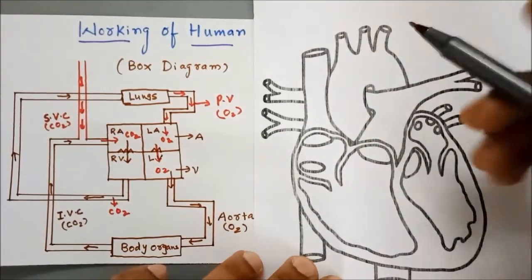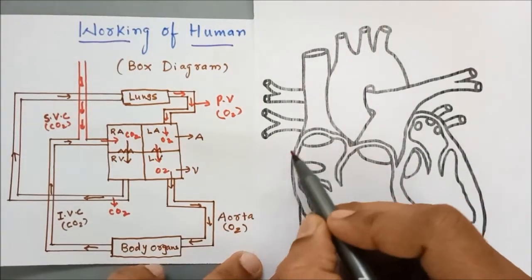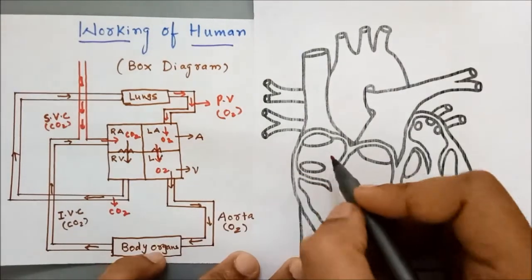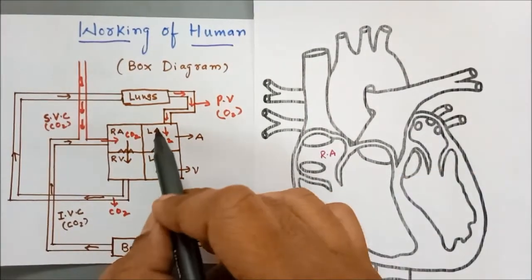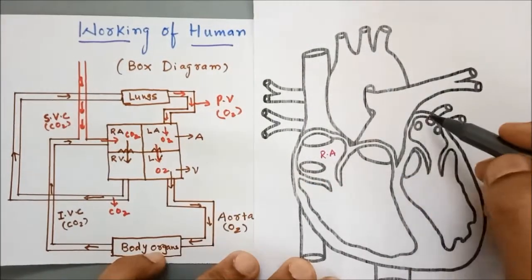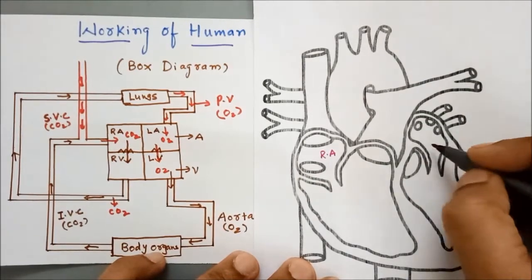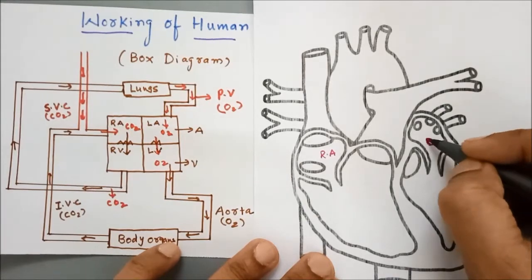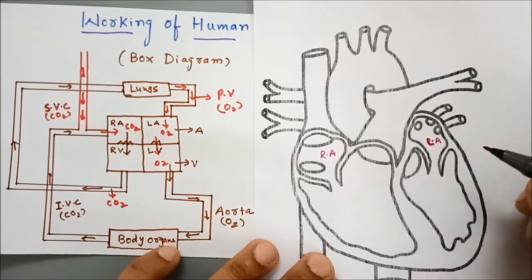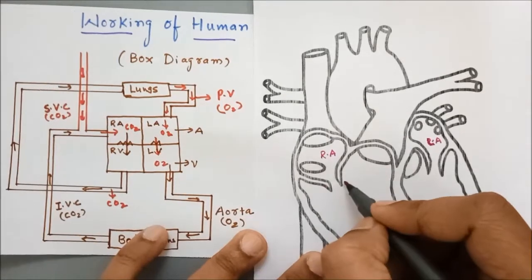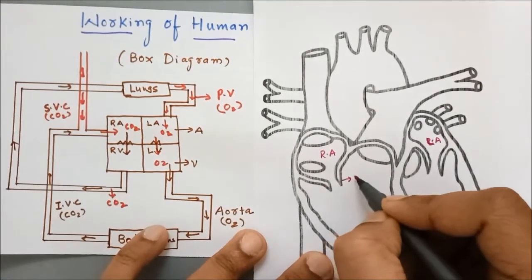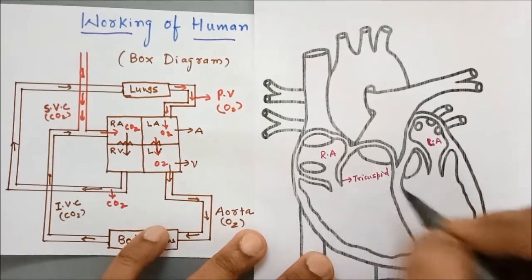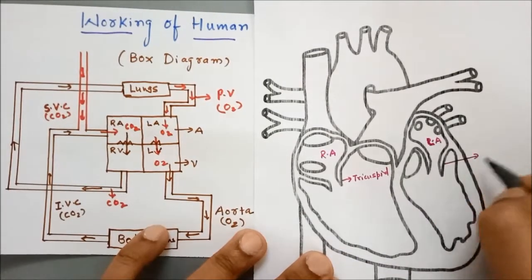Here you can see that this part shown over here is the right atrium. This part shown over here is the left atrium. These are the tricuspid valve, and these are the bicuspid valve.